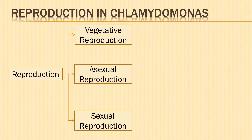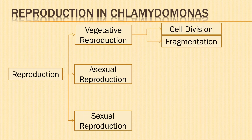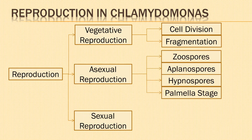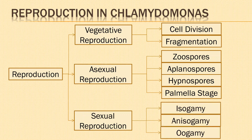Let us learn about reproduction in Chlamydomonas. Reproduction takes place by vegetative, asexual, or sexual means. Vegetative reproduction is by cell division and fragmentation. Asexual reproduction is by the formation of zoospores, aplanospores, hypnospores, and palmella stage. Sexual reproduction is by isogamy, anisogamy, and oogamy.